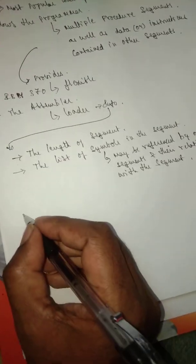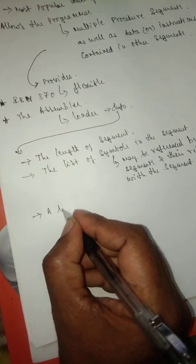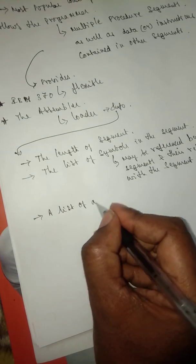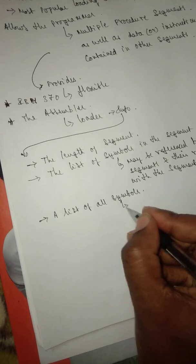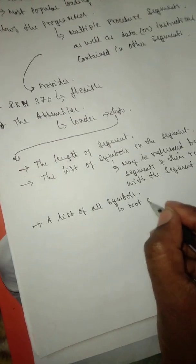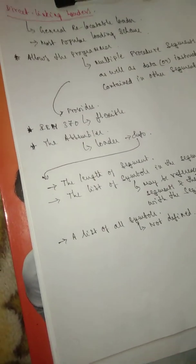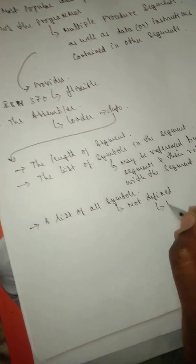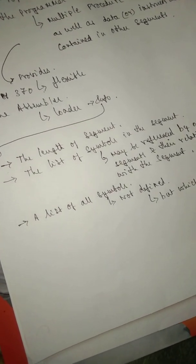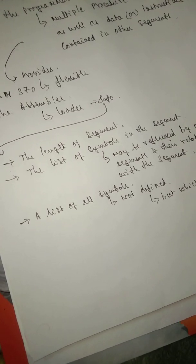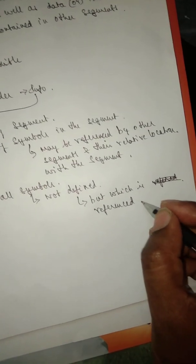So the third information that it has to pass is a list of all symbols not defined but which are referenced in the segment.